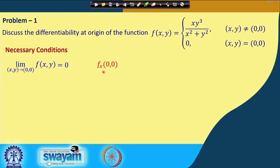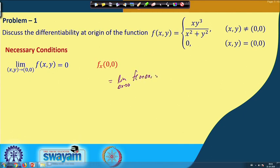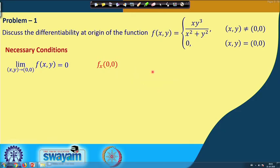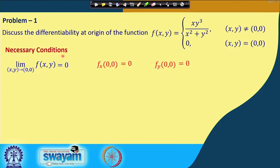The partial derivative fx at (0,0) is the limit as delta x → 0 of [f(delta x, 0) − f(0,0)] / delta x. Since the numerator has a product with 0, this gives 0 − 0 = 0. Similarly fy at (0,0) is also 0. So we have both existence of partial derivatives and continuity of the function at (0,0).